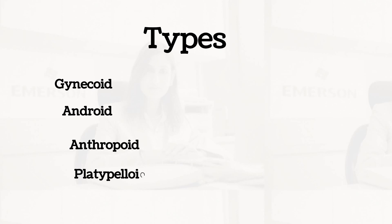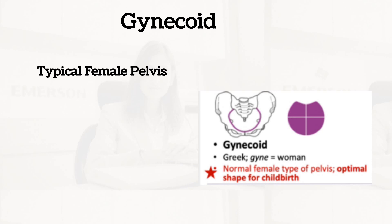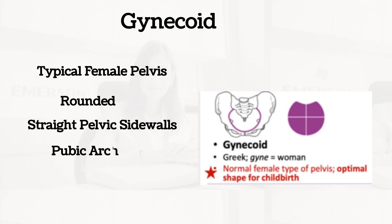Going in detail with the characteristics. A gynecoid is usually a typical female pelvis, commonly found in about 50% of women. It has a slightly oval inlet, straight pelvic side walls, and a wide pubic arc.